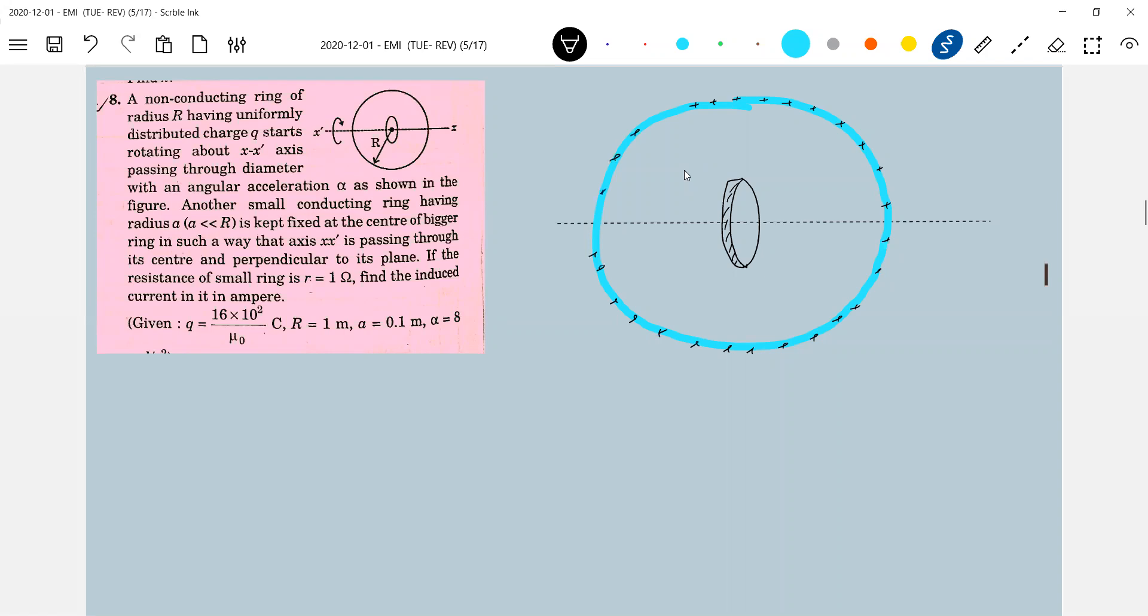Advanced paper in P2 you had similar question. There the shell was rotating, it was asking the magnetic field. Here the ring is rotating, so let me calculate the magnetic field.